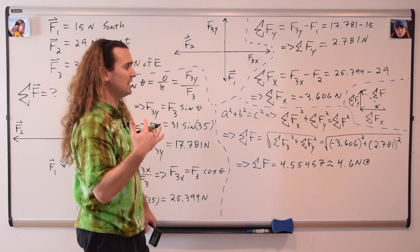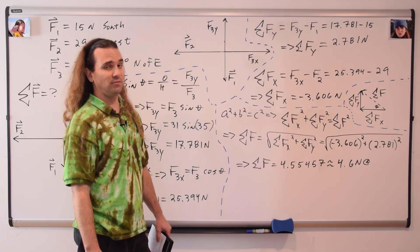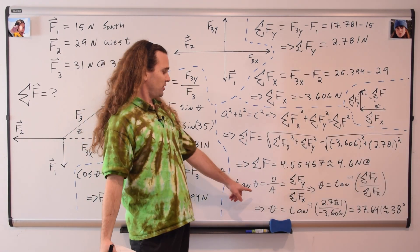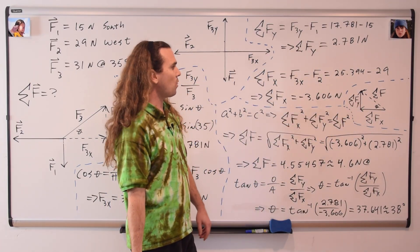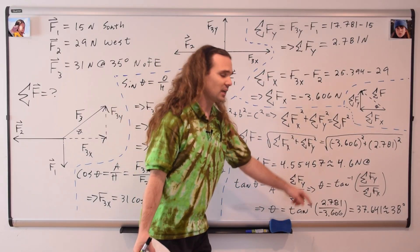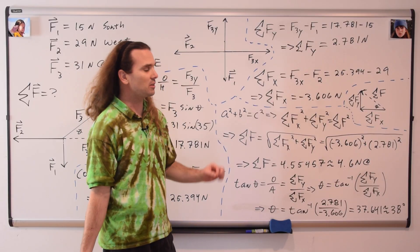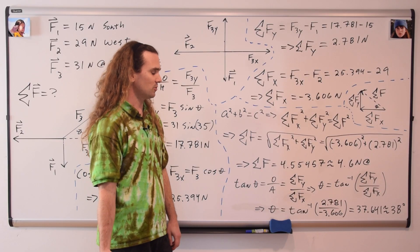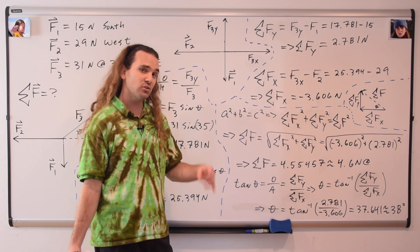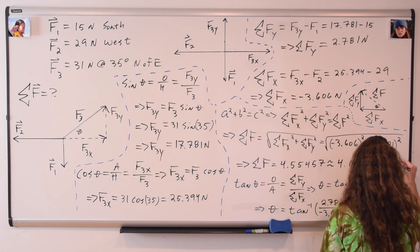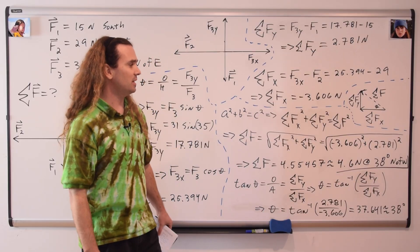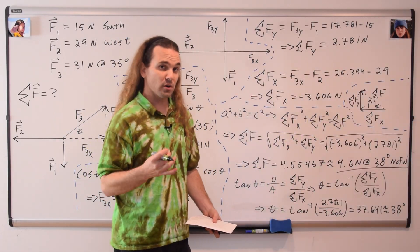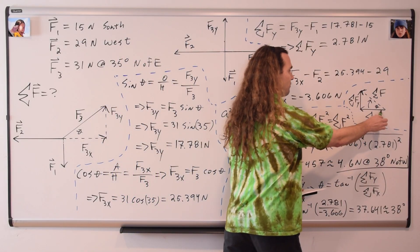And because force is a vector, we need the direction, so we use TOA to figure out the direction. The tangent of theta equals opposite over adjacent. The opposite of theta is the net force in the y direction; the adjacent is the net force in the x direction. Taking the inverse tangent gives us theta equals the inverse tangent of the net force in the y direction divided by the net force in the x direction. Therefore, the inverse tangent of 2.781 divided by negative 3.606 works out to be 37.641, or with two sig figs, 38 degrees. The net force acting on this object is 4.6 newtons at an angle of 38 degrees north of west — that is, north from west, moving in the northerly direction from the west direction.